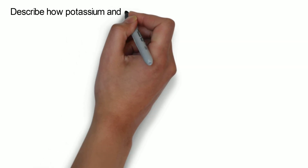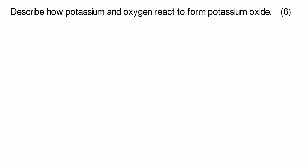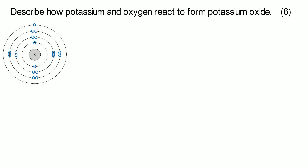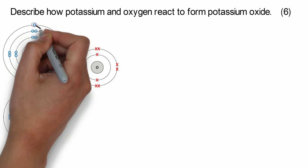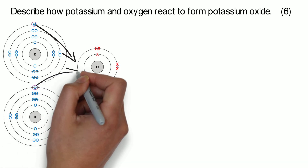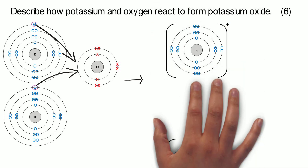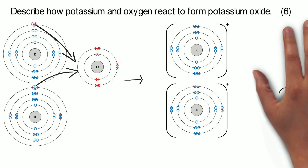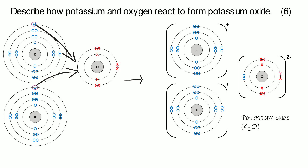Now we're going to look at potassium and oxygen — a similar theme. Potassium is in group one so it has one electron in its outer shell, and oxygen is in group six so it needs to gain two. Pause the video and see if you can work out what's going to happen. Because oxygen needs to gain two electrons but potassium only has one to give, we're going to need two potassium atoms. Each potassium atom loses one electron and the oxygen atom gains two electrons. The ions formed are two K⁺ ions and one O²⁻ oxide ion, giving us the compound potassium oxide — K₂O.